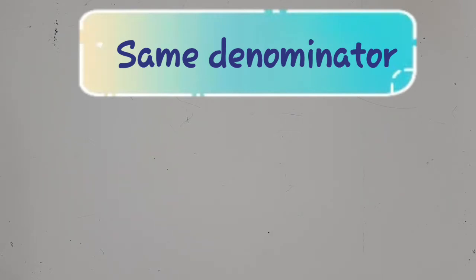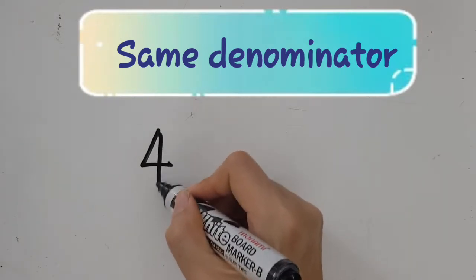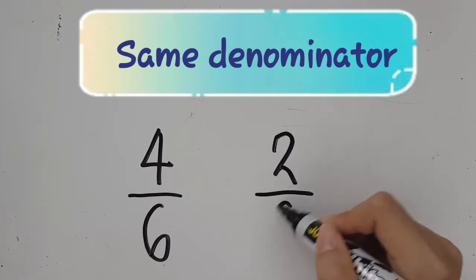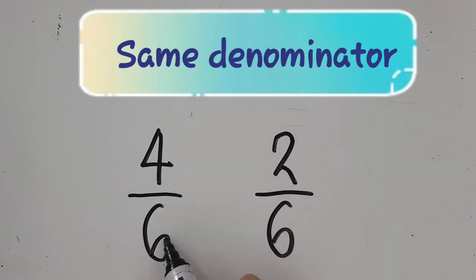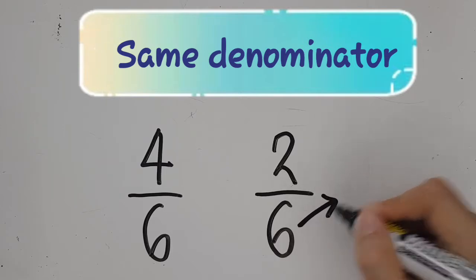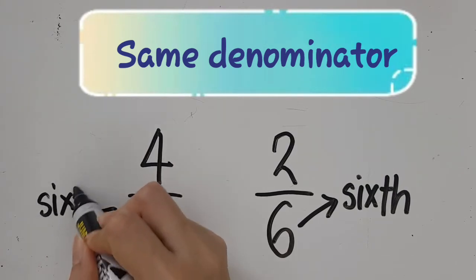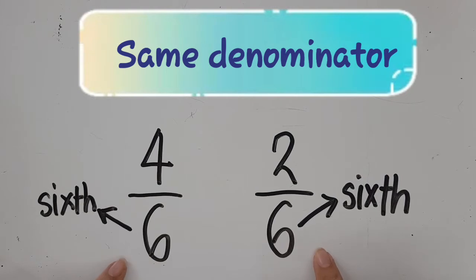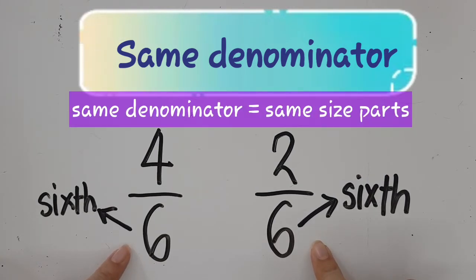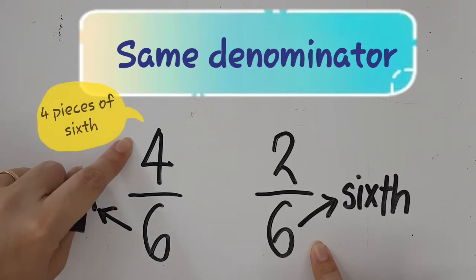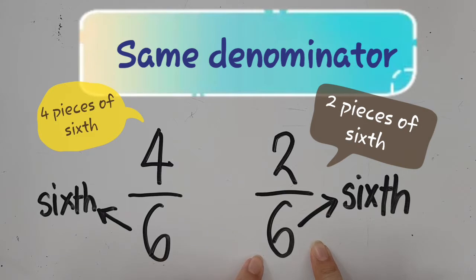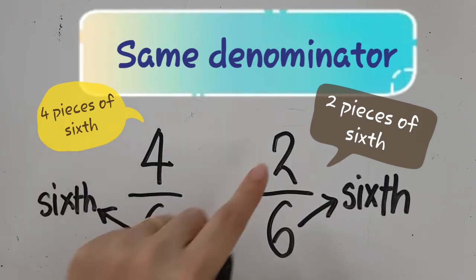The second method to compare fractions is by checking if they have the same denominator. For example, if I have four-sixths and two-sixths, which fraction is bigger and which is smaller? As you can see, they have the same denominator. A denominator of six means that the whole is cut into six equal parts. Since both have a denominator of six, the parts are the same size. Having the same denominator means the parts are the same size. So if they are the same size, four pieces of six versus two pieces of six — four pieces will be more than two pieces.